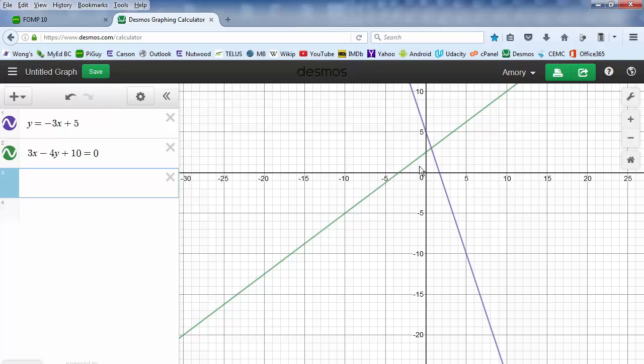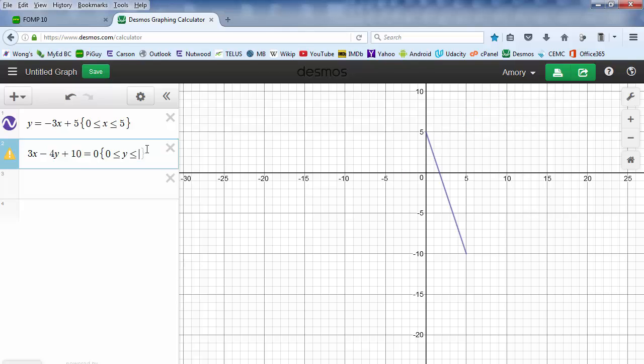Now, one thing that we need to do with the lines is they go on to infinity, so we want to limit where they go. To limit this, we just put in a curly bracket, and we can say 0 is less than or equal to x is less than or equal to 5. So that sets the domain. We can also set the range. So all we have to do is go 0 is less than or equal to y is less than or equal to 5.